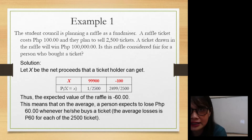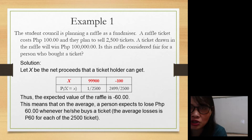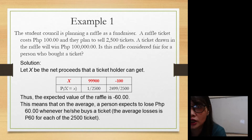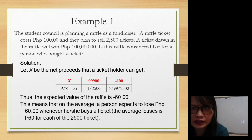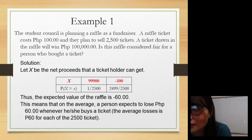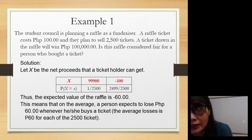The values are negative 100 and 99,900. Why is it negative 100? Because how much is the cost of the ticket? 100 pesos. If a person bought a ticket, the cost is 100. So the probability of getting negative 100 is 2,499 over 2,500. Why? Because out of 2,500, there is only one ticket that can win.